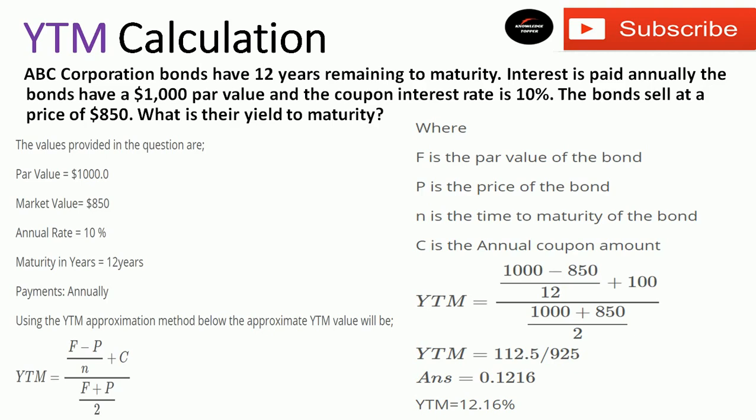Note: sometimes a bond pays interest semi-annually or quarterly. In that case you need to adjust how you calculate the coupon payment. I already made a complete video on how to calculate coupon rate and coupon payment for annual, semi-annual, and quarterly payments, so do watch that.